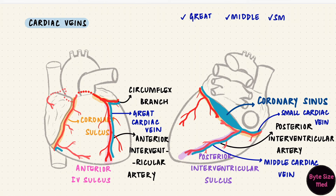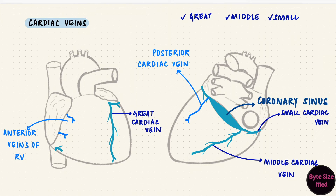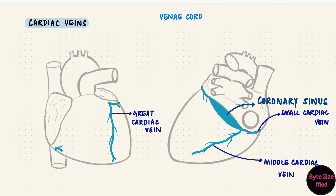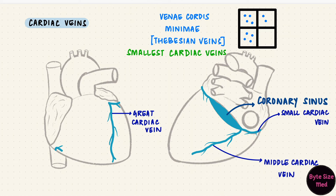Those are the three most important veins: the great, middle, and small cardiac veins. There are others, including the posterior cardiac vein, the anterior veins of the right ventricle, the right marginal vein, and the oblique vein of the left atrium — the last of which appears in embryology. There are also the venae cordis minimae, or Thebesian veins — the smallest cardiac veins, different from the small cardiac vein. These can drain directly into any chamber of the heart, including occasionally the left atrium or left ventricle. Since they carry deoxygenated blood but sometimes enter the left heart, they can contribute to mixing of oxygenated and deoxygenated blood, making them anatomical shunts.